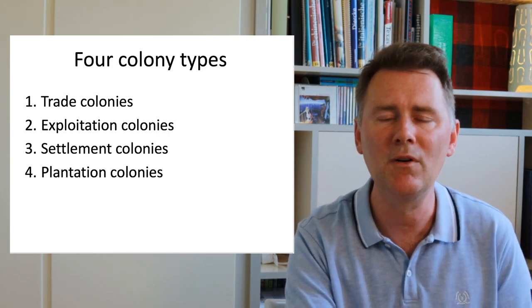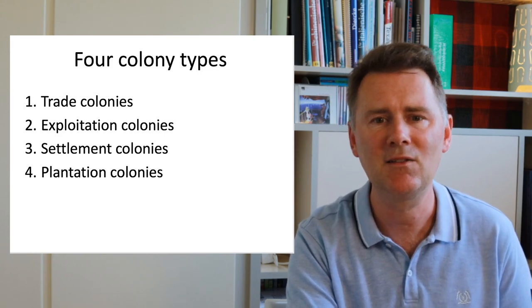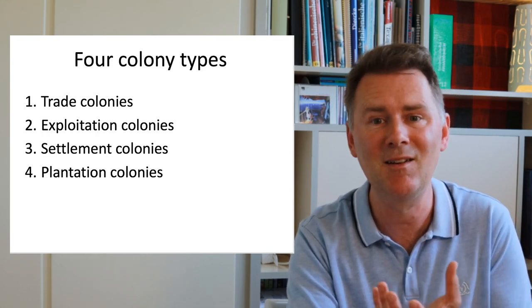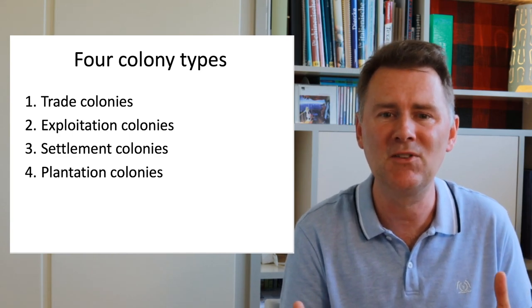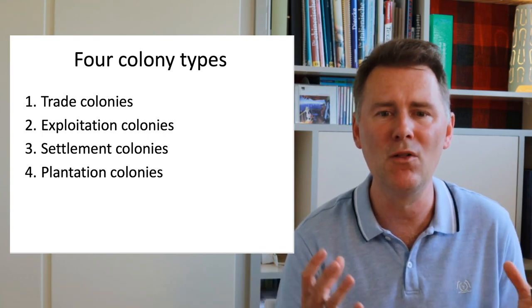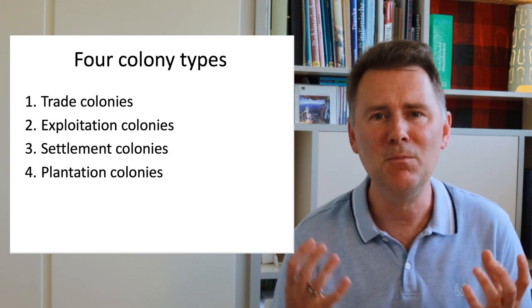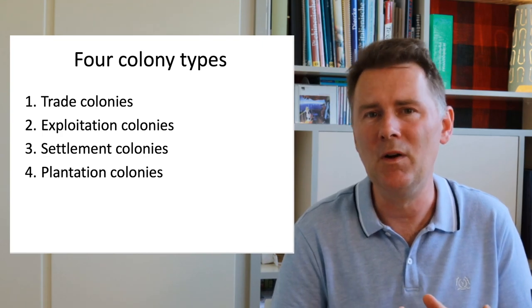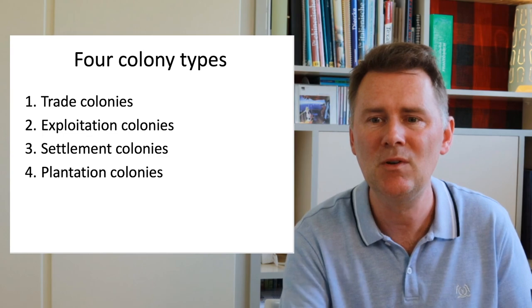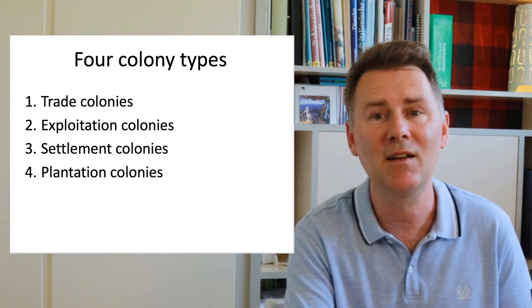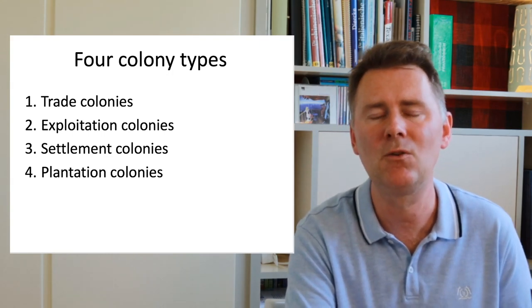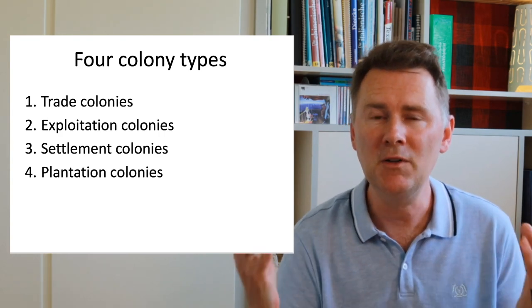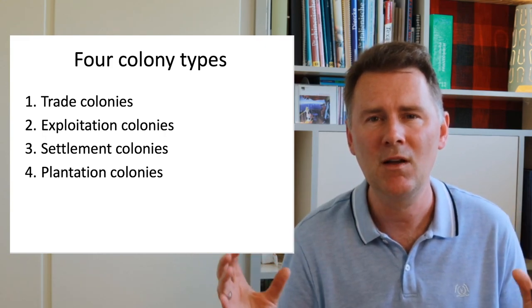This completes a brief overview of four different colony types and the language varieties they give rise to. The most important insight is that different social settings produce different varieties of English. You might think one reason is that English came into contact with very different local languages — and that is of course true — but as we'll see in more detail in the next videos, the social settings have produced profound consequences on the structures and characteristics of the new varieties formed. Creole languages, no matter where they are spoken, have a great deal in common.